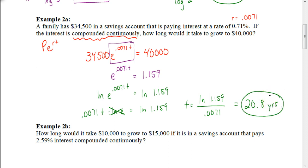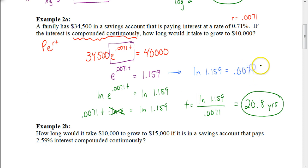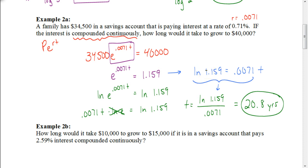Going back to the step where we had the base by itself, we could have done it a different way. Instead of taking the natural log of both sides, I could put this in logarithm form. Since the base is E, it's going to be the natural log of our value 1.159 equals our exponent, which is 0.0071 times T. Dividing both sides by 0.0071 gives the same answer of 20.8. So after you get the base by itself, you can take the natural log of both sides, or put it in natural log form — either way works.